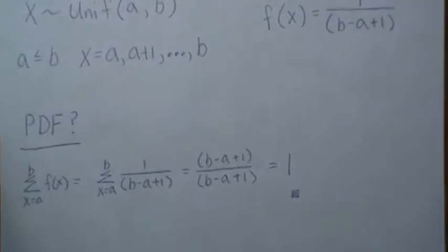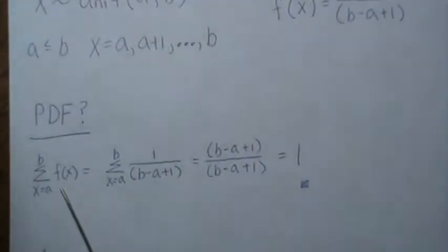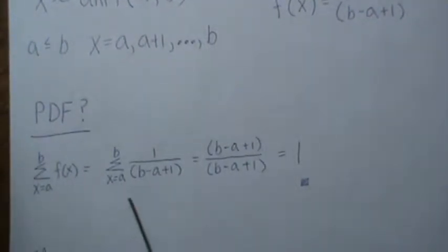So now let's first of all see if this is a PDF. We're going to sum over all possible values of our probability mass function. And since there's no X or no index, we can take it out front, and then there's B minus A plus 1 of those, and so that is 1.